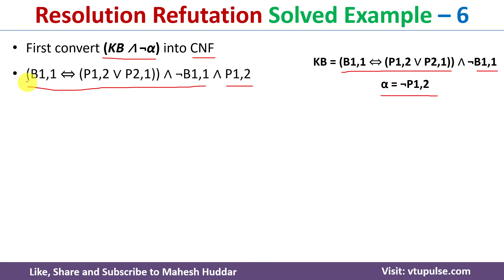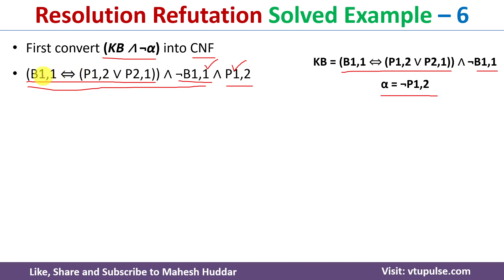There are mainly three clauses — connected by conjunction, which is fine. There is no issue with the second and third clauses, but if you look at the first clause, it contains a biconditional. So we have to remove this biconditional to get a proper conjunction of clauses where each clause has OR connectivity.